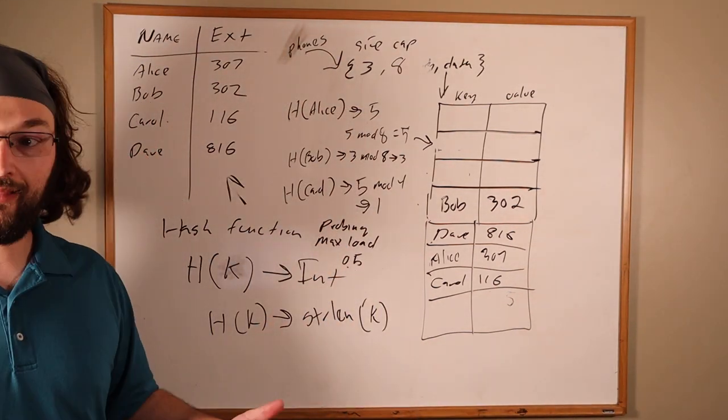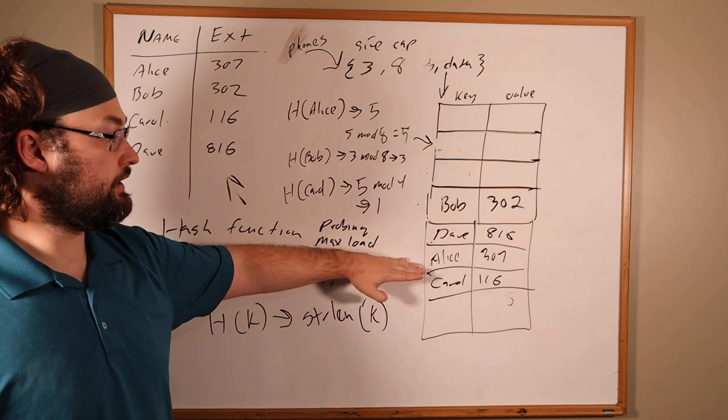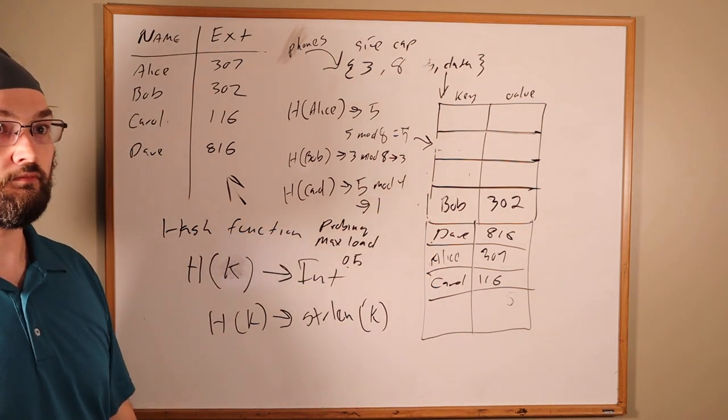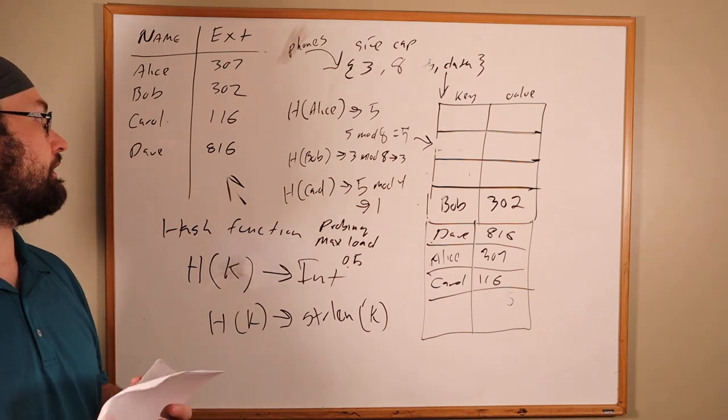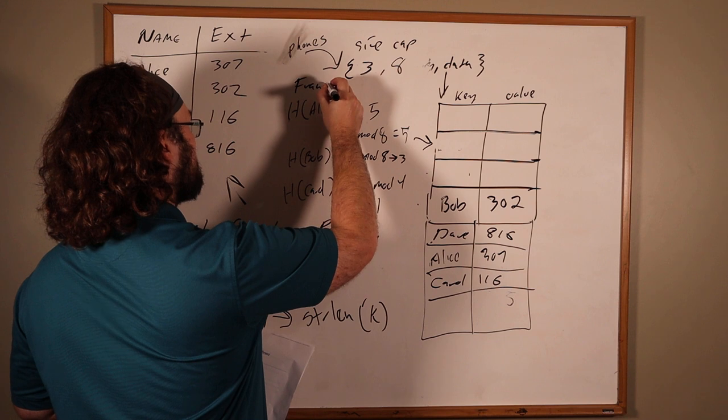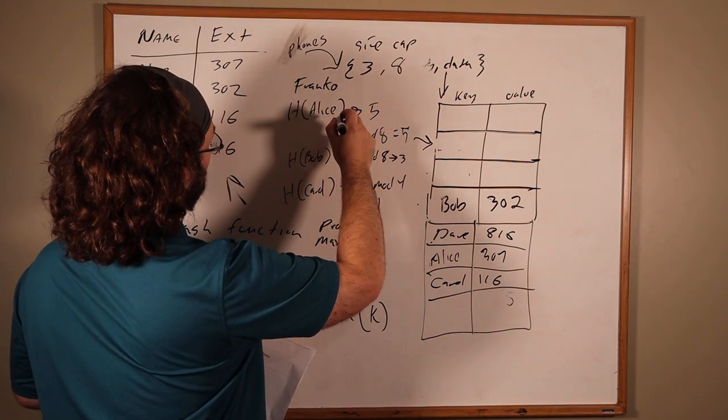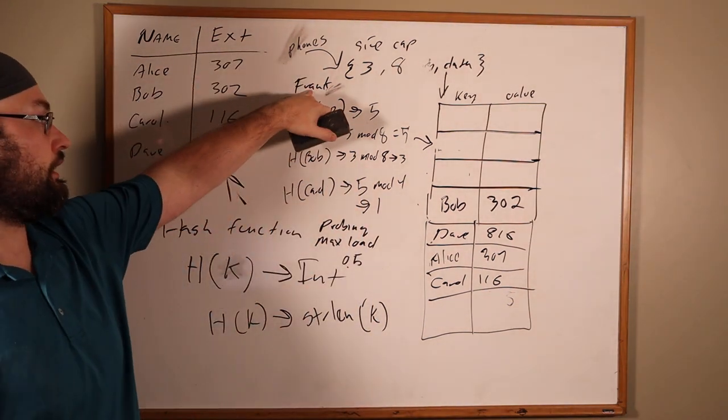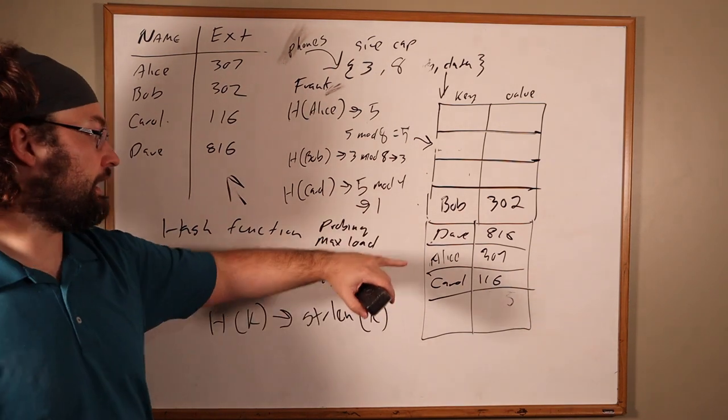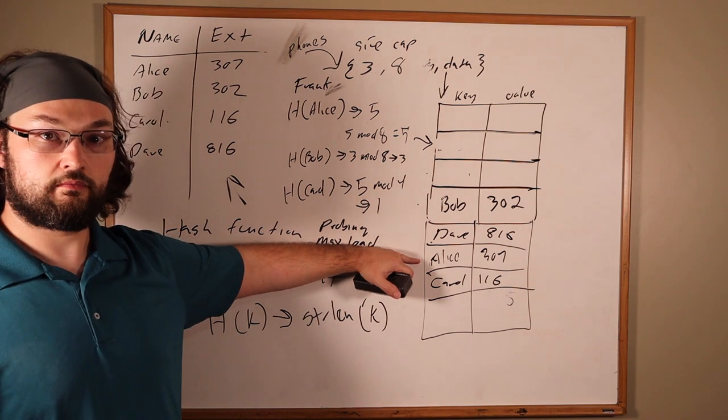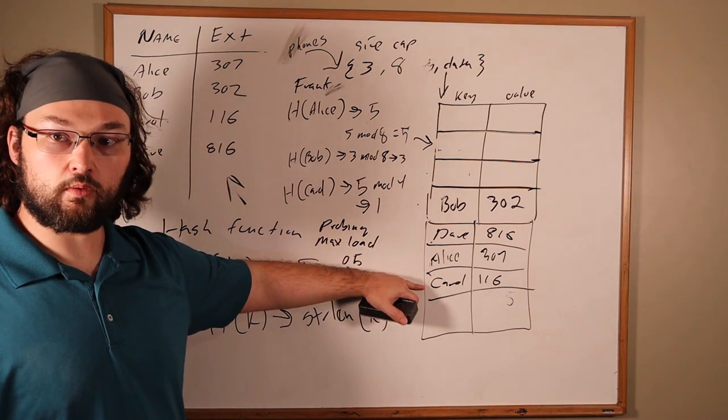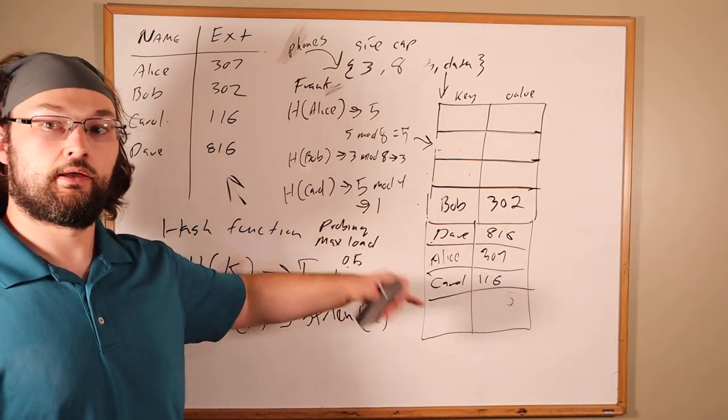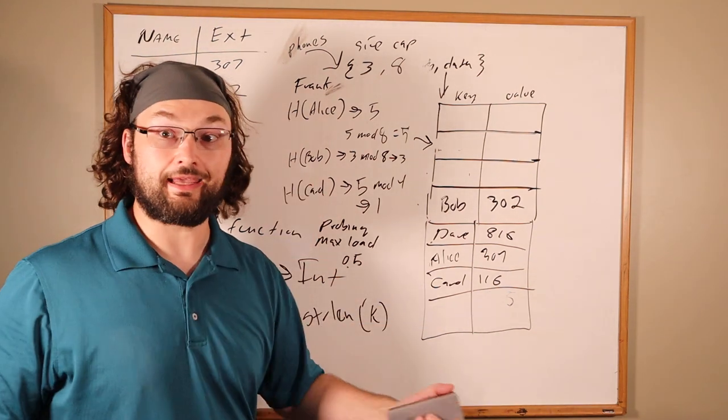Now if we want to look up Alice, we hash it, find out it's here, and start scanning forward and we find Alice. If we want to look up Frank, hash of Frank is 5, 5 mod 8 is 5. We look in slot 5, that's not Frank. We look in slot 6 because we're probing forward one at a time, that's not Frank. We probe forward again, that's not Frank and it's empty, so we can return a lookup failure. Frank is not a key that appears in this table.